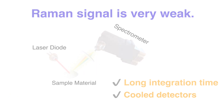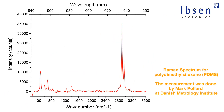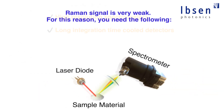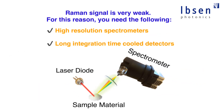The peaks in Raman, as shown here, are normally quite dense — very sharp and close together in some cases. So another characteristic of Raman is that you need high-resolution spectrometers. High resolution and cooled detectors — that's typical for Raman.